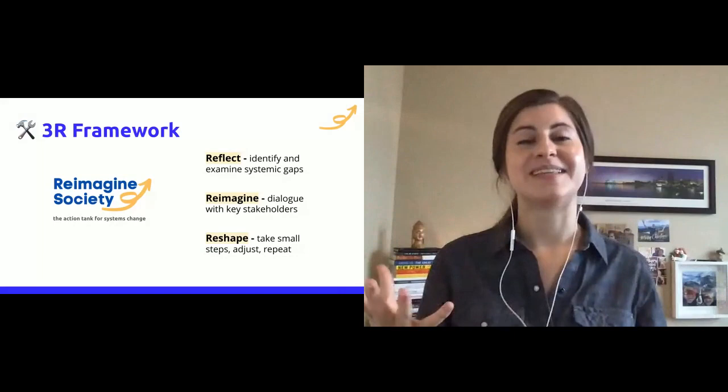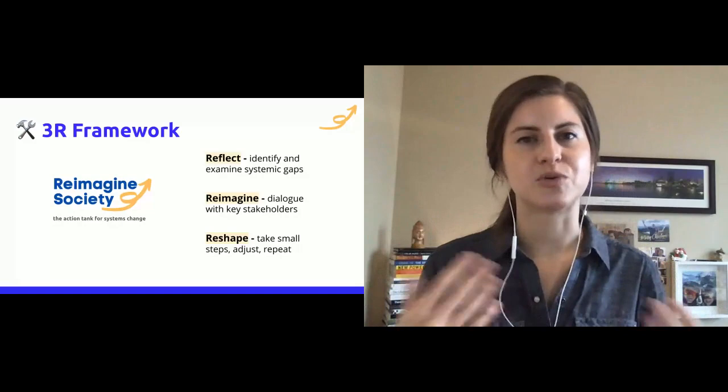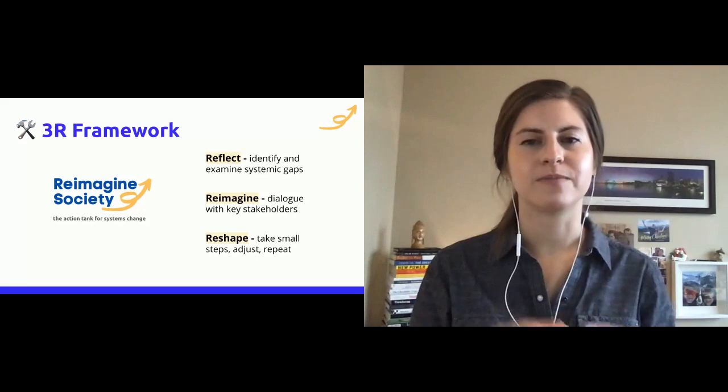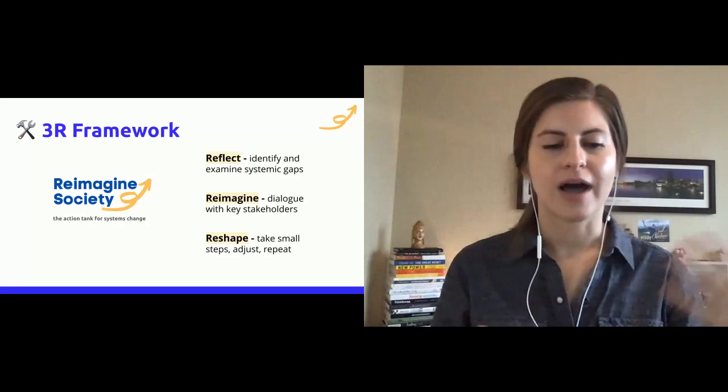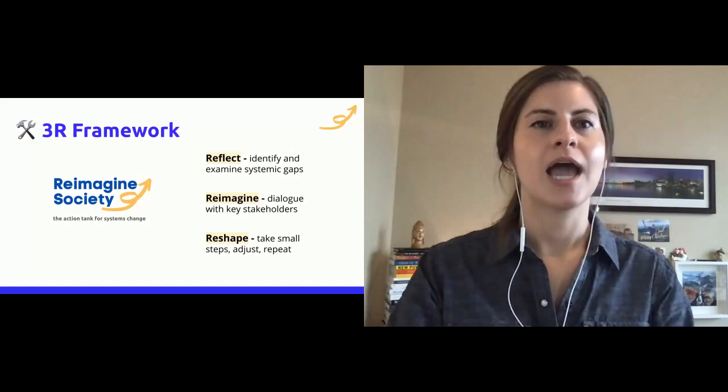And then finally, you want to reshape. This is the third R in the framework, and it's to take small steps, adjust, and repeat. So reshaping is really about let's start redesigning the system and figuring out what we want to do next. And you want to take small steps, adjust along the way, and kind of repeat the process as you go. I hope this framework will be useful in the work that you do. This has been the easiest framework for me to break down with Reimagine Society. So when we see more system gaps that come up, we have a thought process to go through to start understanding where we can take our first step and what we need to learn more.